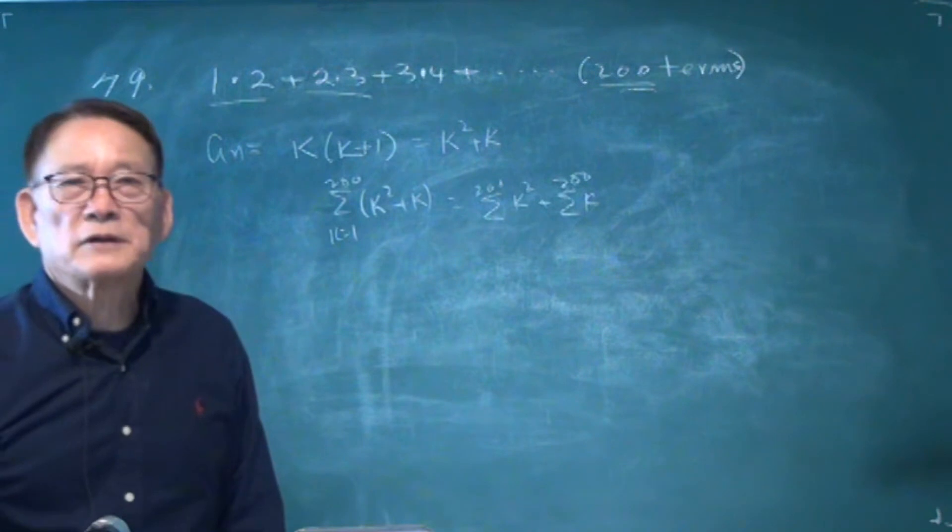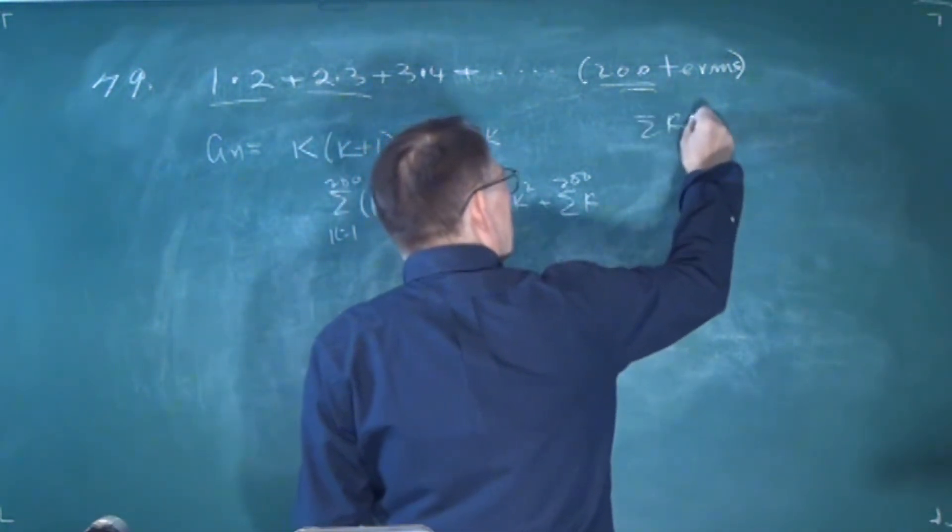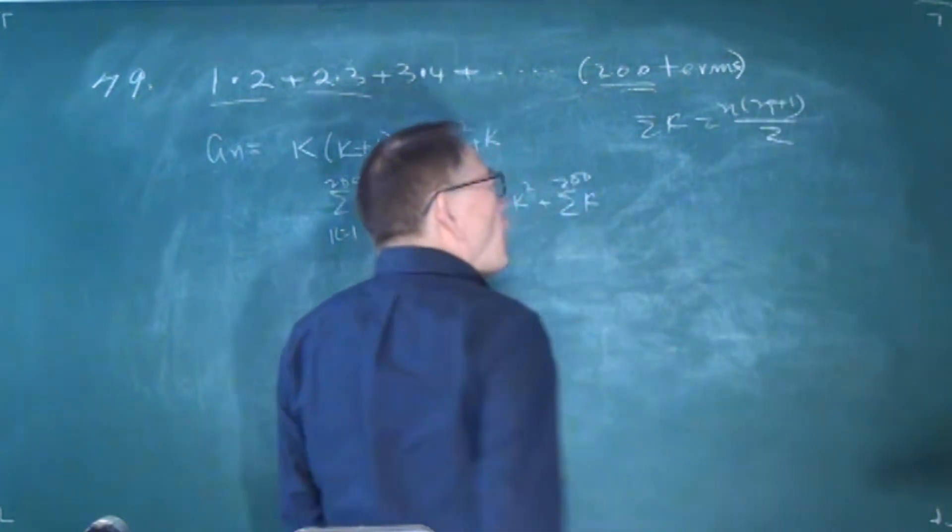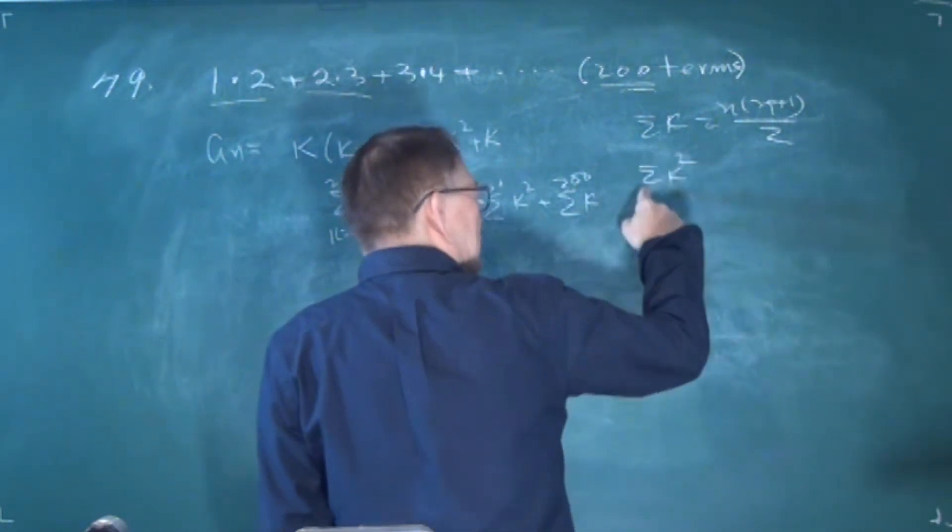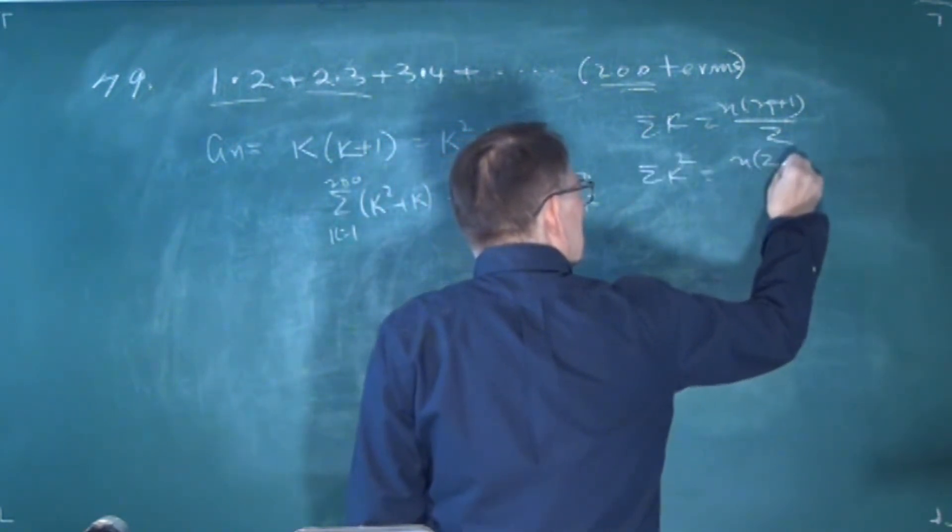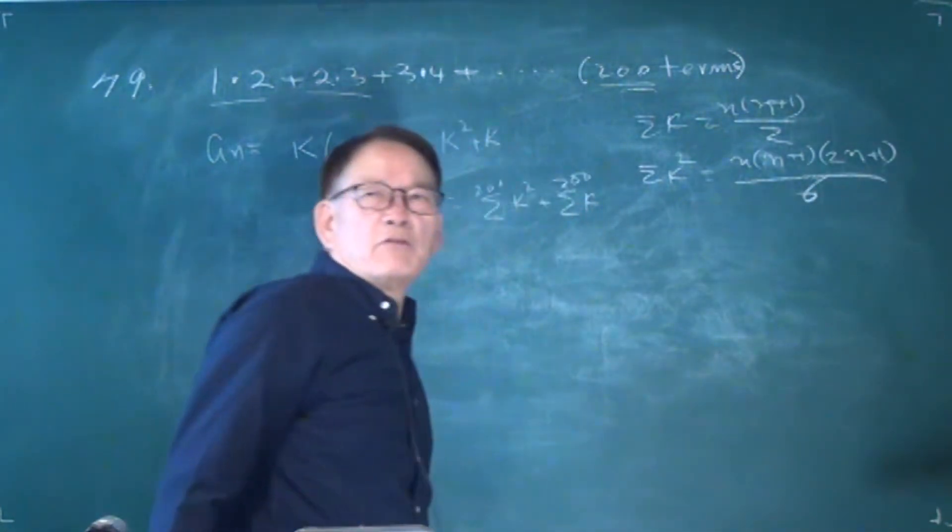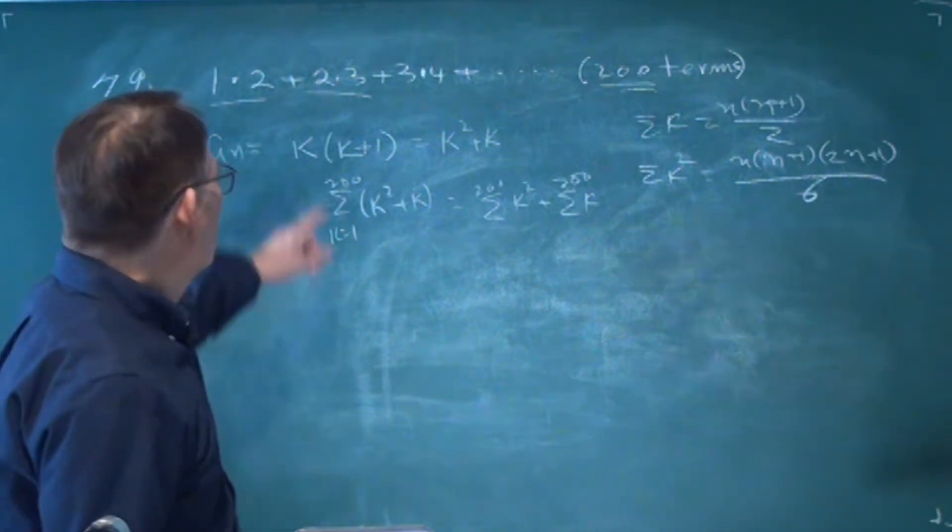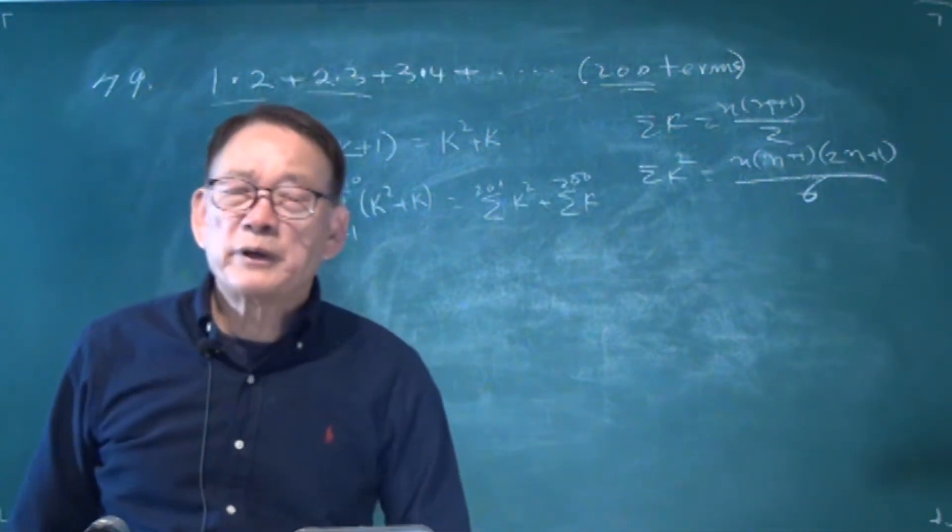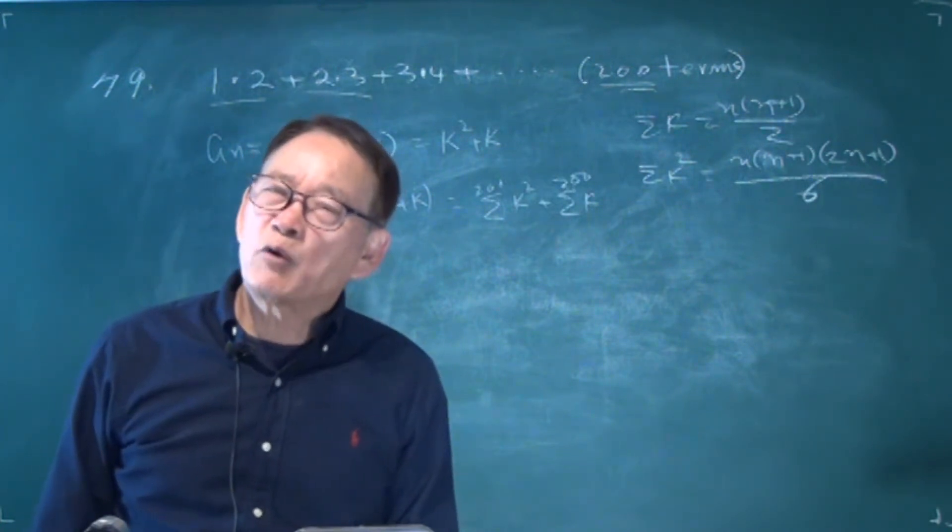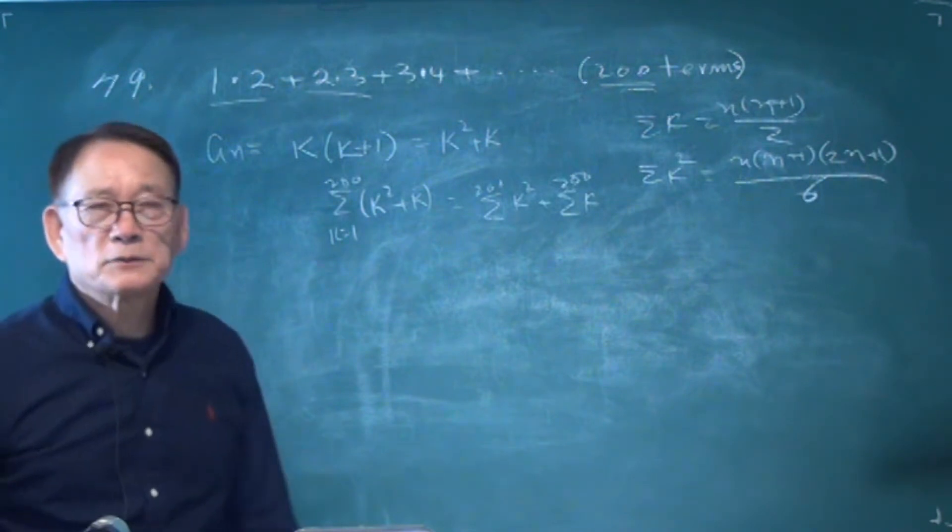Here you must memorize the formulas. Sigma k equals n times n plus 1 divided by 2. And sigma k squared equals n times n plus 1 times 2n plus 1 divided by 6. This is the formula. When two numbers are multiplied, it generally involves k squared. When three numbers are multiplied, it usually goes up to k cubed, and four numbers involve k to the fourth.